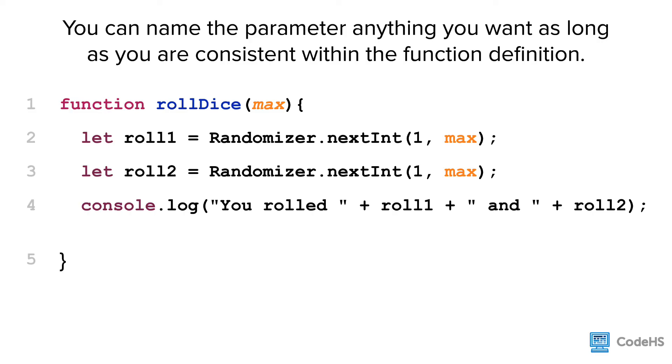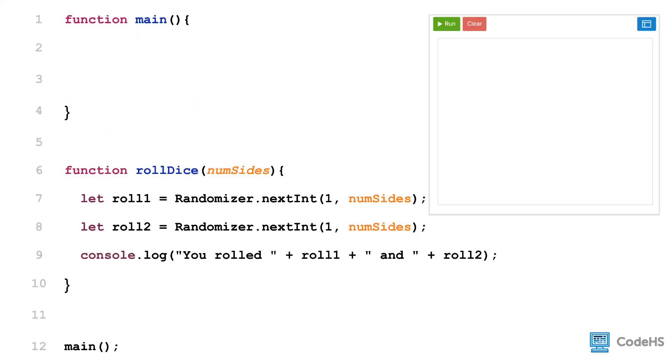Here, we've named the parameter max, so we change the maximum of the randomizer to match the parameter name. Now let's go back to our full program.